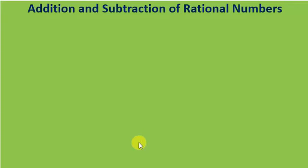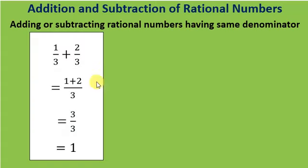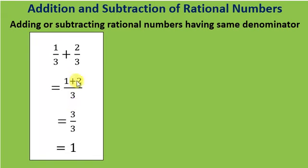Now we will learn about the addition and subtraction of rational numbers. First, addition and subtraction of rational numbers having the same denominator. For example, 1 by 3 plus 2 by 3 — here the denominators are the same. We simply add the numerators and take the common denominator: 1 plus 2 divided by 3, which equals 3 divided by 3, which equals 1.